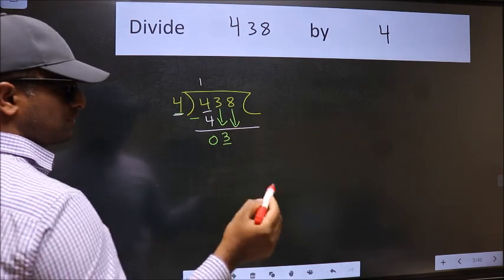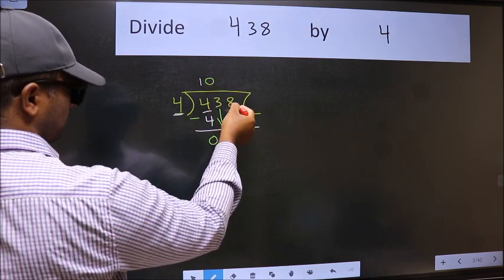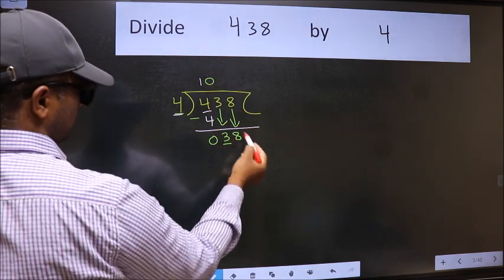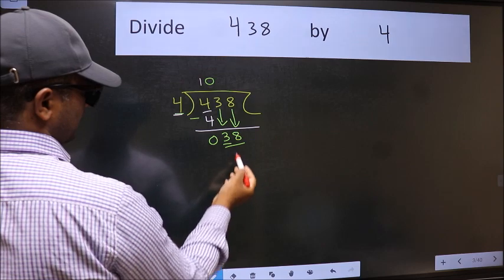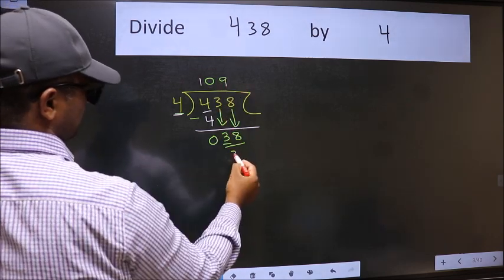And the rule to bring down second number is we should put 0 here. Then only we can bring this number down. Now 38. A number close to 38 in 4 table is 4 nines 36.